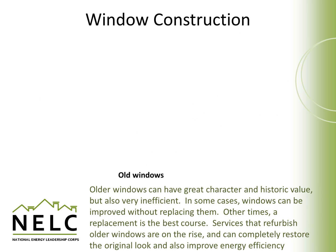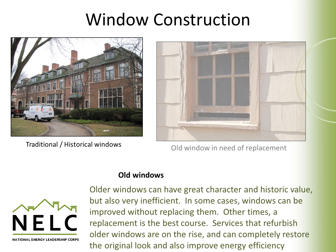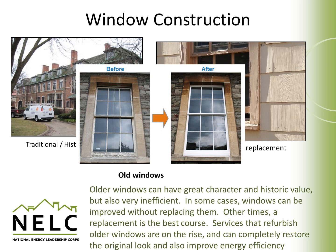Let's take a look at some different types of windows, starting with some older windows that can be found in place. Older windows can have great character and be very attractive and sometimes even have a historic value, but often times are only made of a single pane of glass and are very inefficient. In some cases, windows can be improved without replacing them. Other times, however, it's better to remove the window and replace it. There are increasing numbers of services that will take older windows and refurbish them, completely restoring their original look while also improving the overall energy efficiency.